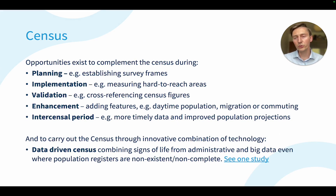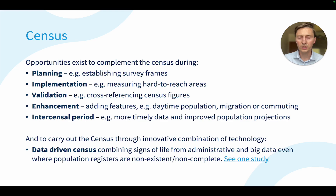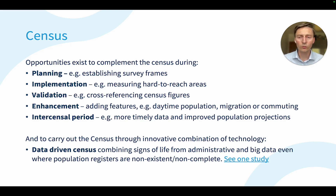We can either replicate data we have from the census or complement it, and we can do that during different phases of the census — for example, in the planning or implementation phase. In the implementation phase, this is especially useful in countries where hard-to-reach areas make a 100% census nearly impossible. Mobile phone data results can be used to estimate population numbers in those areas.